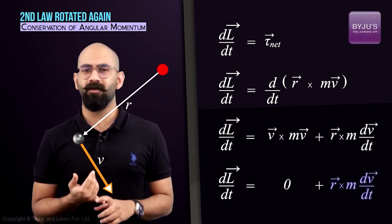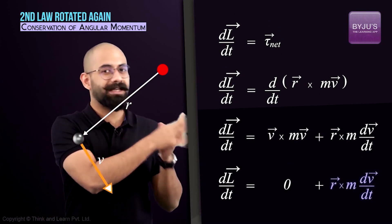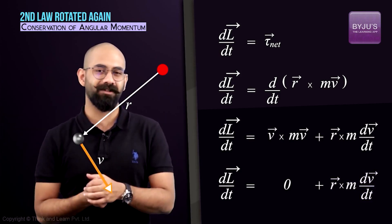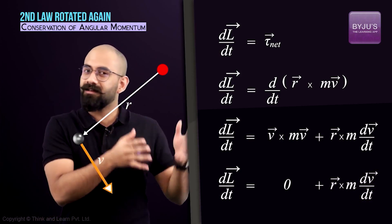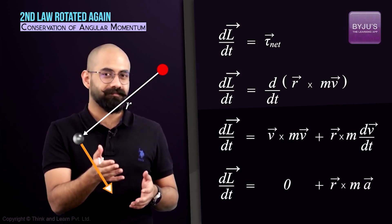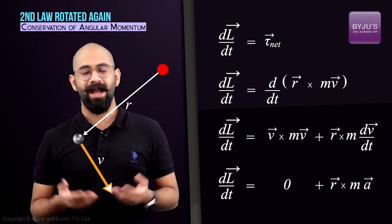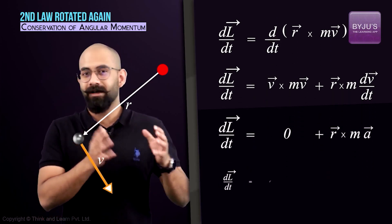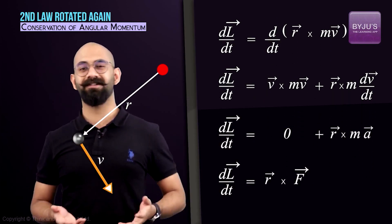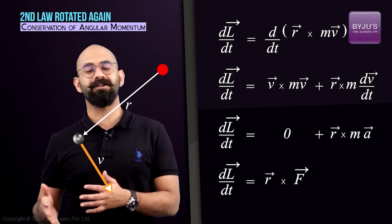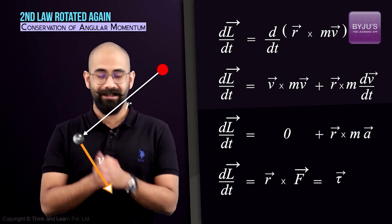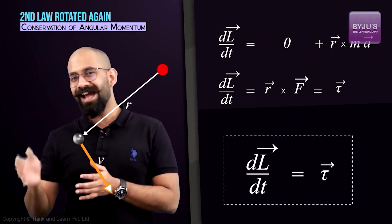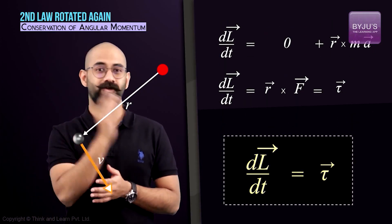The second term is r cross m·dv/dt. Since dv/dt is acceleration a, this becomes r cross ma, and ma is simply the force acting on the point mass. So the term becomes r cross F, which is nothing but the torque acting on this point mass about the reference point. Therefore, dL/dt equals torque.